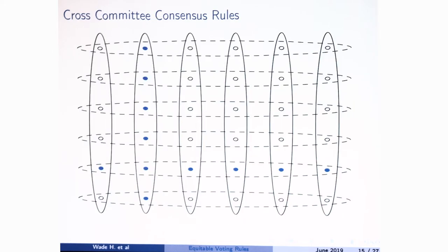Another example: you arrange people on a grid, and as long as you can find one column and one row where all people vote for one, then the outcome is one. Same thing for minus one, but if you can't find such a column and row, you take majority rule. Again, these are pretty reasonable kinds of voting rules that really can't show up when your voting rule has to be anonymous.